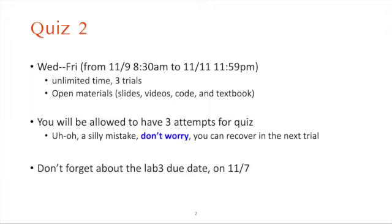There is no time limit after you start the quiz. Like quiz 1, we will have the same open material policy — you may refer to lecture slides, videos, code, and textbook. However, you are not allowed to communicate with others during the quiz. You can take the quiz up to three times, so please take advantage of this policy. If you got a score of 5 out of 9, you can take it again to make a better score. If you make a mistake during the first attempt you can use the second chance to recover, but there will be no more than three attempts, so please be extra careful on the second and third attempts.